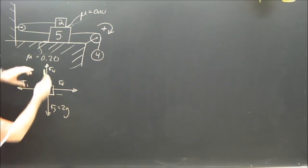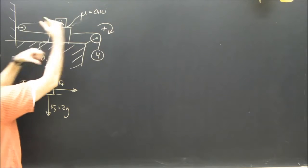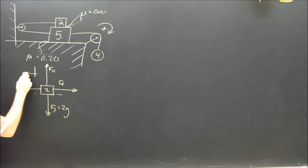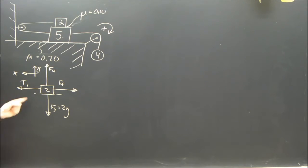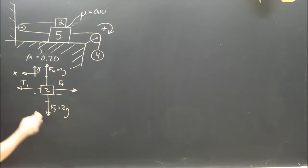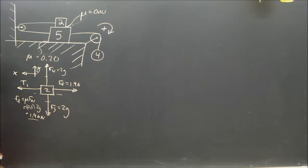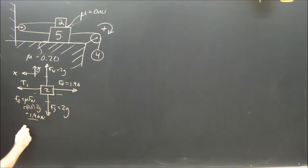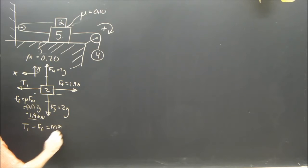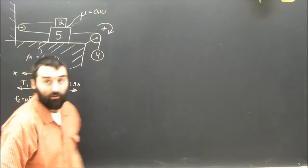Positive x on the two kilogram object is to the left, because the pulley redirects: positive is right on the five, but positive is left on the two. The normal force and gravity are equal, both 2g. The force of friction is μFN = 0.1 × 2g = 1.96 N. So my x-direction equation is: T1 − 1.96 = 2a. That's equation one.